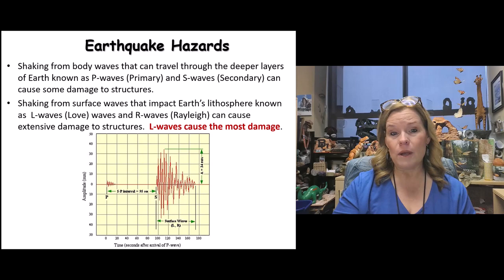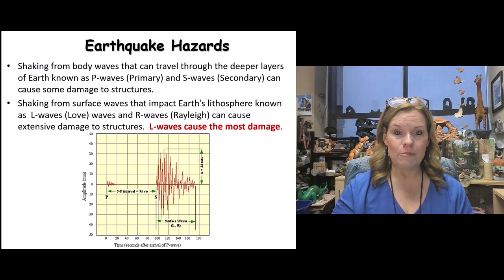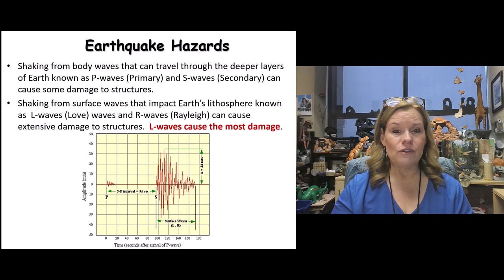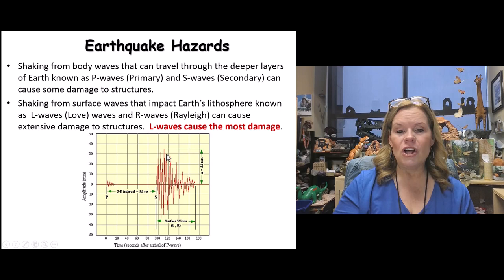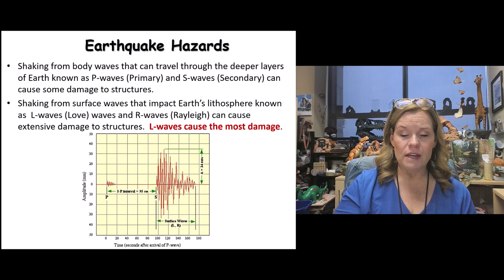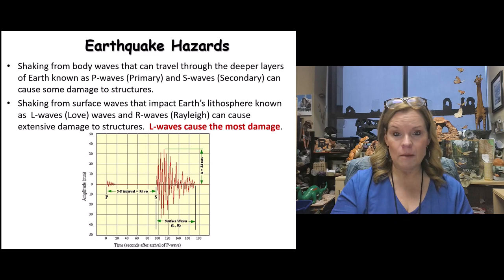Earthquake body waves move at a certain average velocity. L and R waves don't have the same predictable travel time because of the varied geologic materials they pass through. For example, in very loose sands, beach deposits, or flood deposits, earthquake waves behave differently than in dense rock like granite. Once the S wave arrives, you can see the top and bottom of the earthquake waves on the seismograph. The amplitude — the tallest wave height — tells us the intensity of shaking and is plugged into a model to determine magnitude.